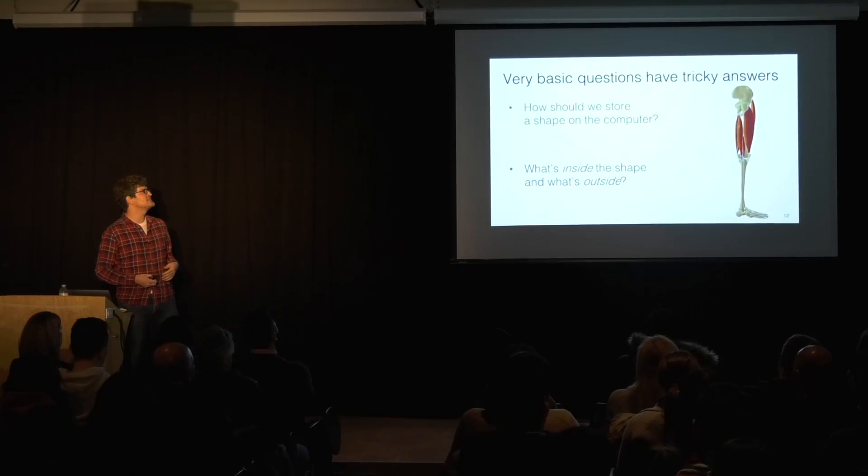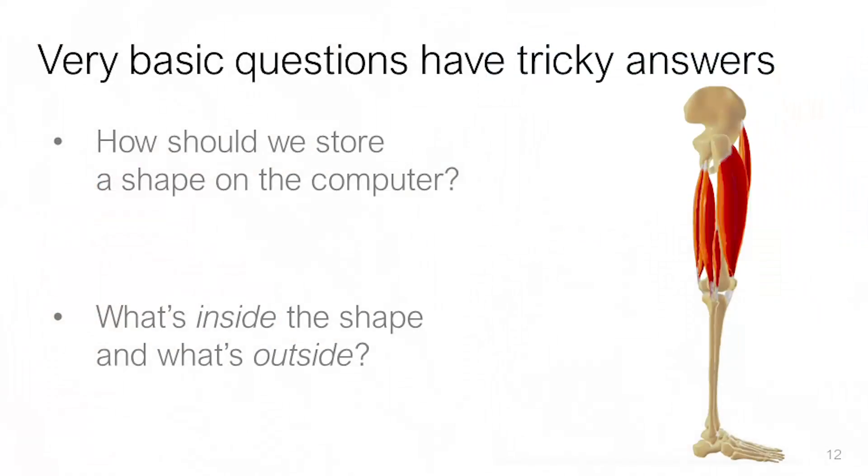A lot of interesting algorithms like simulation start here. So if we want to simulate the leg interaction between the muscles and the bones, we need to know what part of space is inside the muscle, is inside the bone, and what's just air around our geometry.